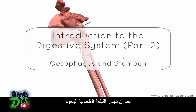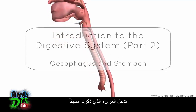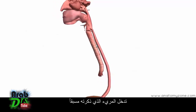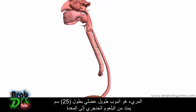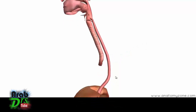After the bolus of food passes from the pharynx, it enters into the esophagus. The esophagus is another long muscular tube — about 25 centimeters long — and it joins the laryngopharynx to the stomach.